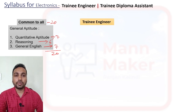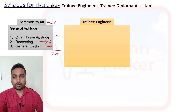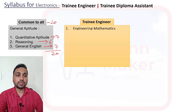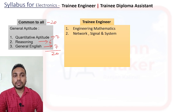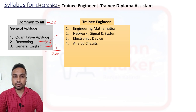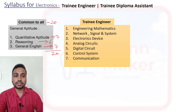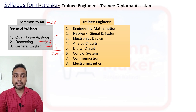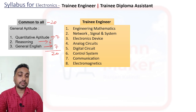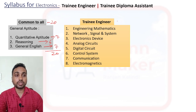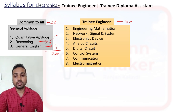Now for electronics branch trainee engineer candidates, you will get questions from: engineering mathematics, network signals and systems, electronics devices, analog circuits, digital circuits, control systems, communications, and electromagnetics. These eight subjects cover all 100 technical questions in your CBT.